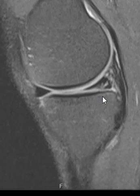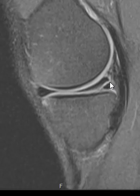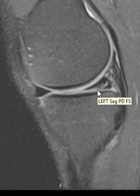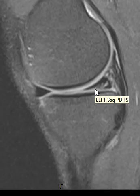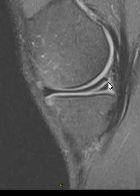The meniscus has three components: the inner component, the middle component, and the outer or peripheral component. This one looks like it comes through the outer component and touches the undersurface in the middle, and maybe even to the inner third. I would call this a middle and peripheral third tear — an oblique undersurface tear.